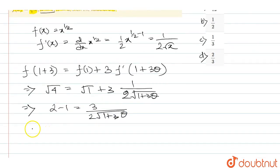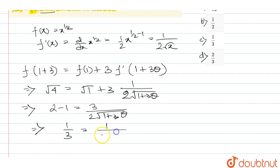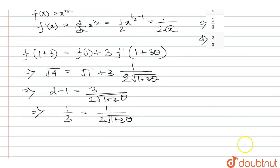So 2 minus 1 equals 1, and 1 equals 3 divided by 2 under root of 1 plus 3 theta. Therefore 1 by 3 equals 1 by 2 under root of 1 plus 3 theta.